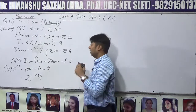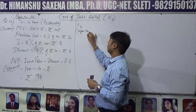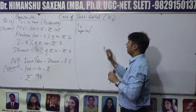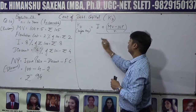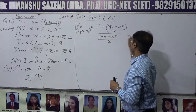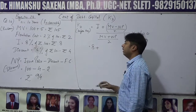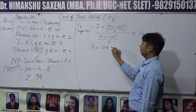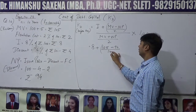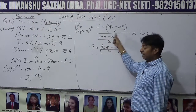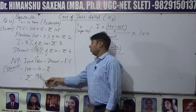Before-tax cost of debt का formula याद होगा: Kd = [I + (MV − NP)/n] / [(MV + NP)/2] × 100. Interest I = ₹8, Maturity Value MV = ₹105, Net Proceeds NP = ₹94, Number of years n = 10. MV + NP by 2: (₹105 + ₹94)/2.